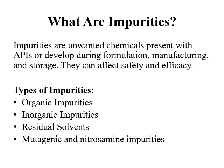The types of impurities include organic impurities, inorganic impurities, residual solvents, metallic impurities, mutagenic impurities, and nitrosamine impurities. So these are the main types of impurities encountered in pharmaceutical development.